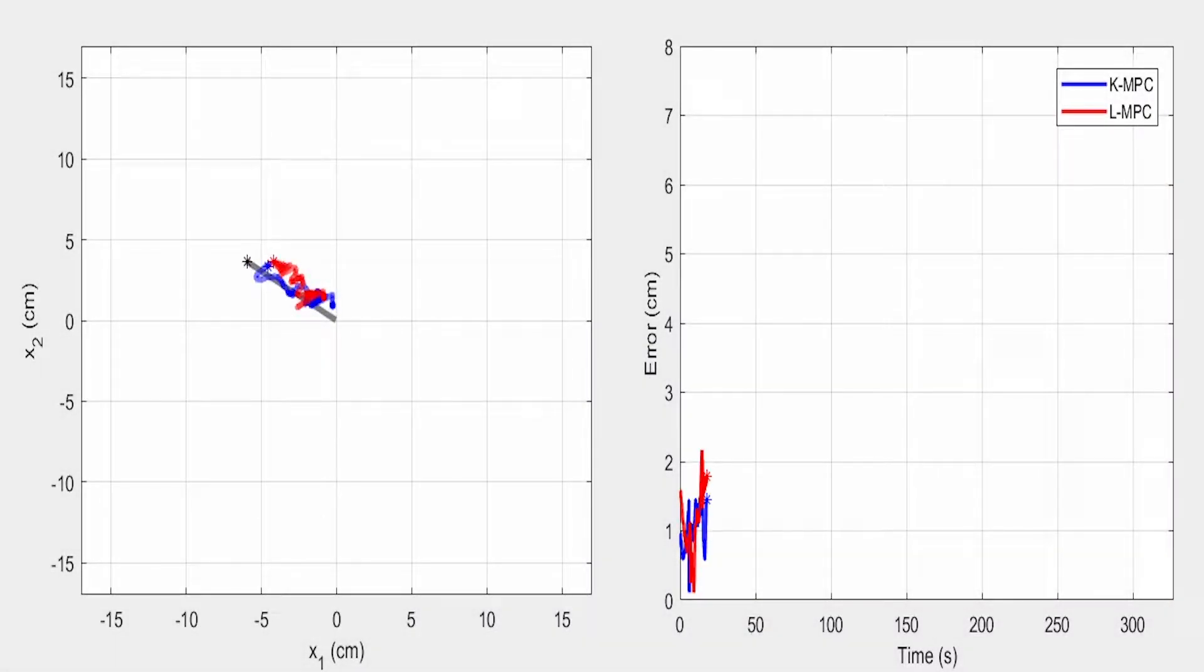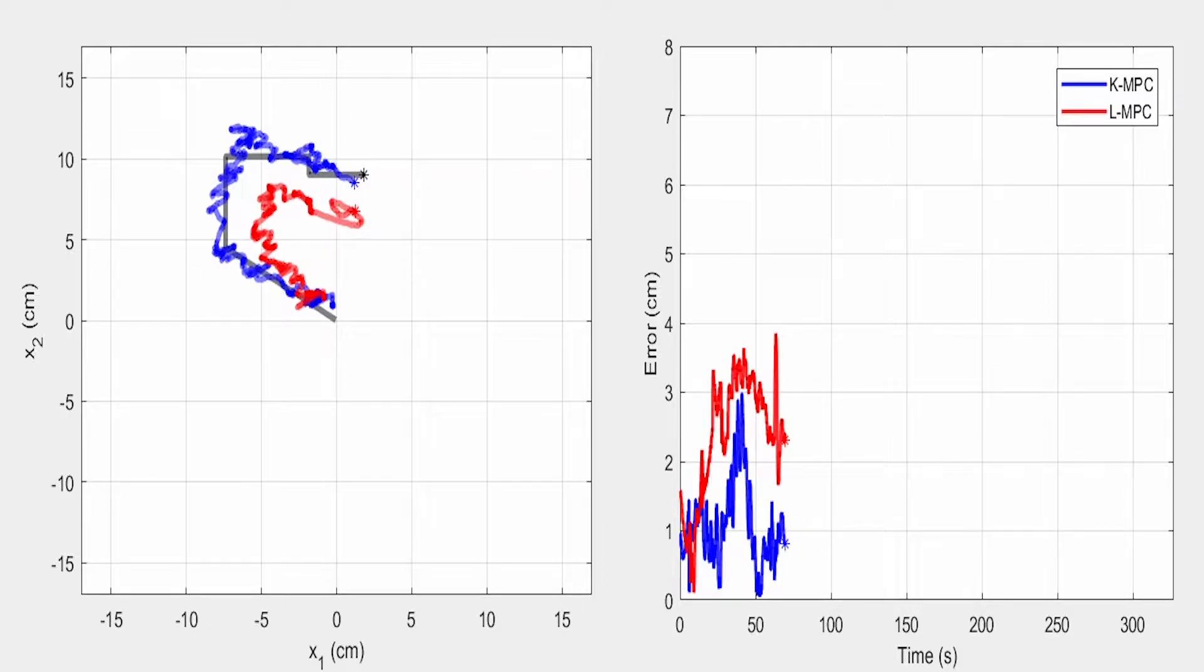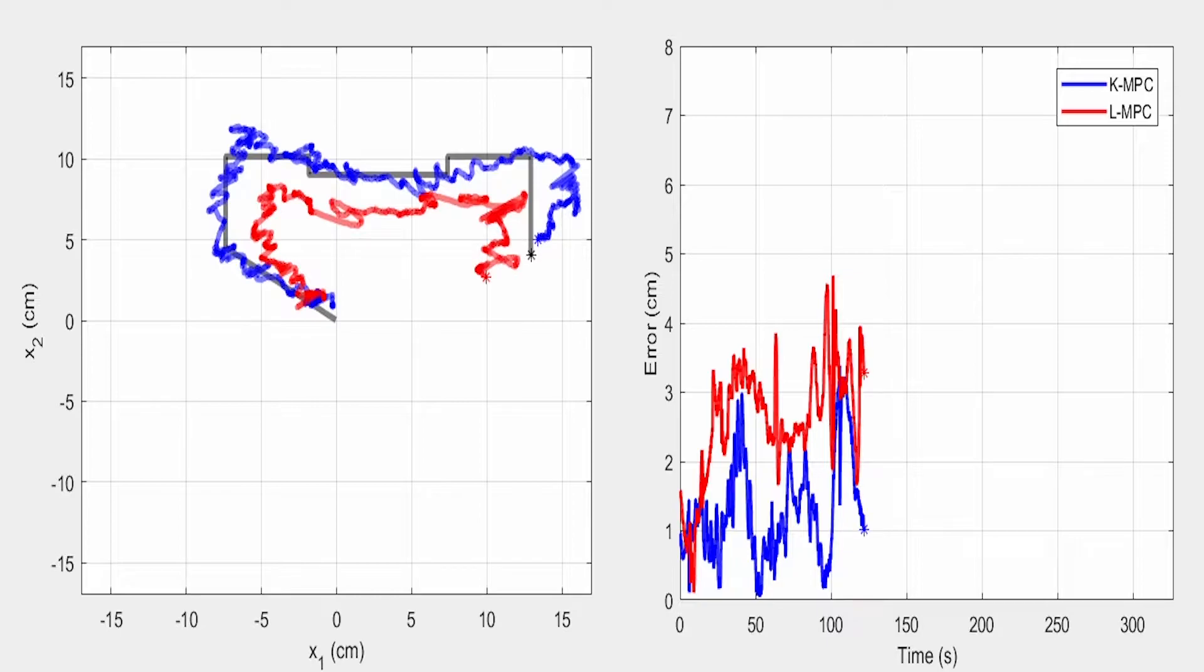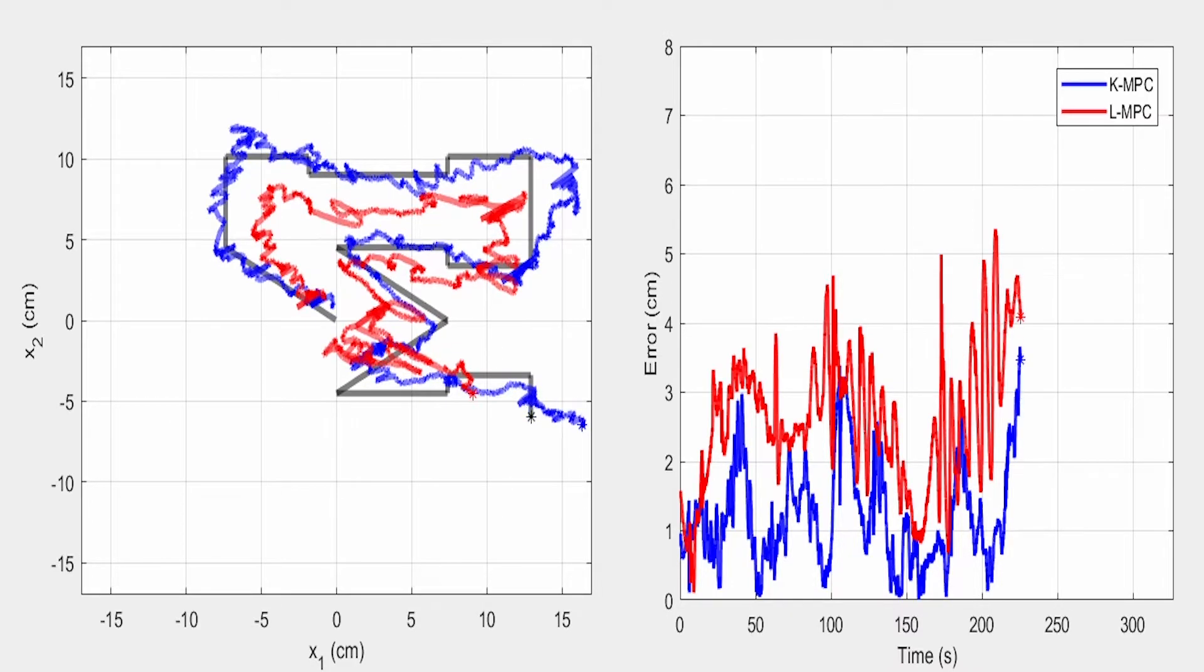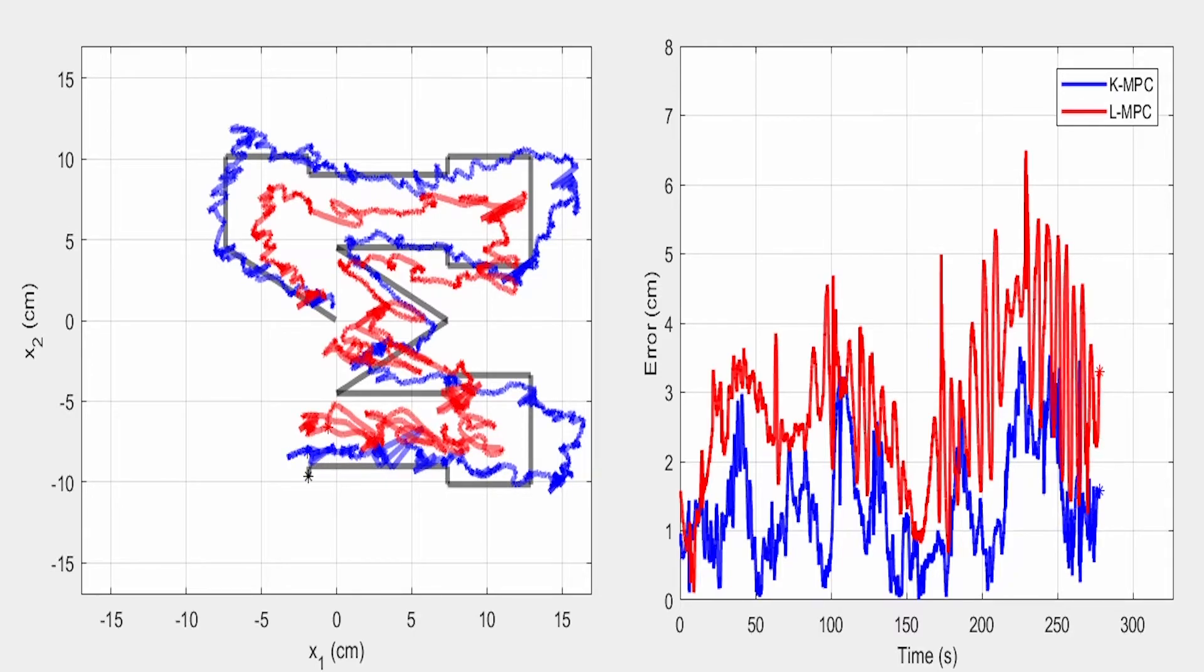To provide a baseline for comparison, we also construct a controller using a linear state space model. If we plot the response of both controllers with the Koopman controller shown in blue and the linear state space controller shown in red, it can be clearly seen that the Koopman controller achieves a lower tracking error over almost the entire trajectory.